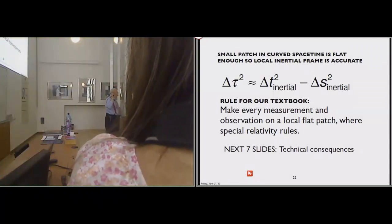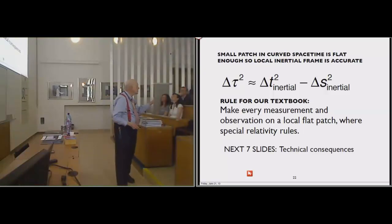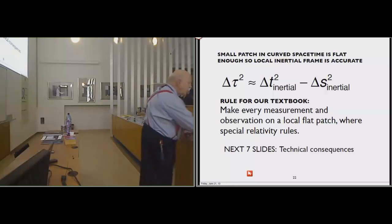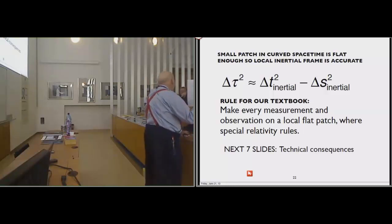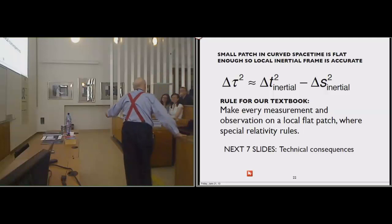We're going to talk about a series of local inertial frames that are flat enough so you can do a measurement in them. This is from the Montreal World's Fair. We're going to build this sphere in imagination around the black hole, and we will have patches of it like you have patches of Slovakia on the curved earth. If it's a small enough patch, then it's inertial. You're back to special relativity. The rule for our textbook is you make every measurement and observation on a local flat patch where special relativity analyzes everything. Now, the next seven slides are going to be technical. You can go to sleep, or you can do the best you can. Then we have this whole talk in Slovak, and you can go back and say, oh, that's what he meant.